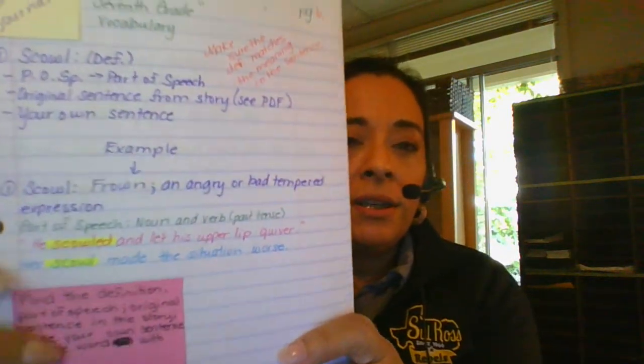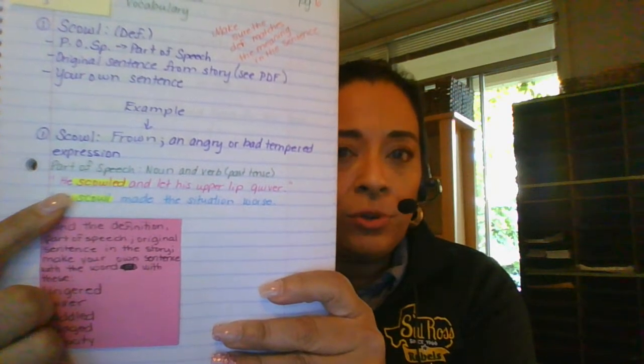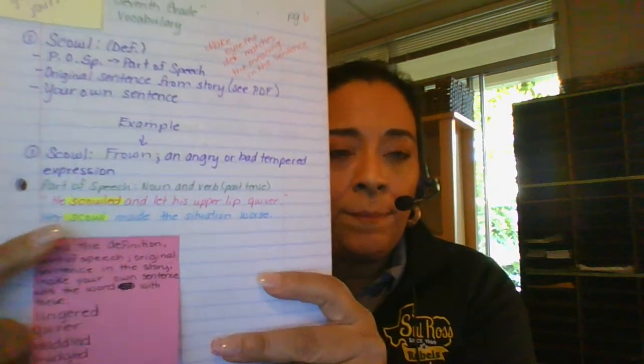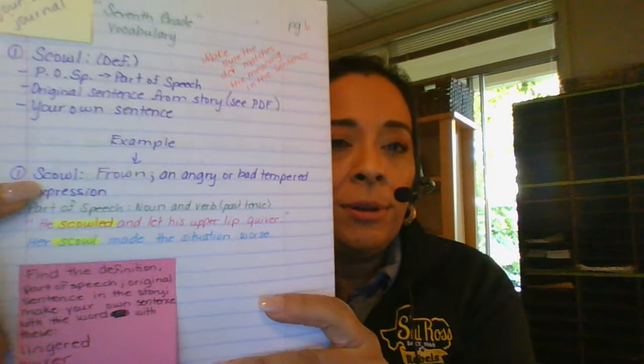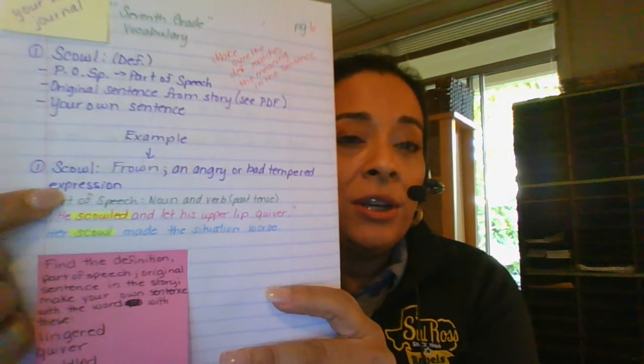So what you're basically going to do with these words, I already made one for you as an example, you're writing that one down. And one of the vocabulary words that are in your story is scowl.